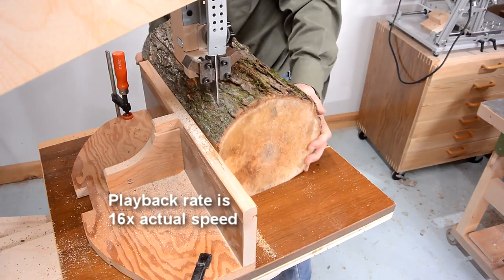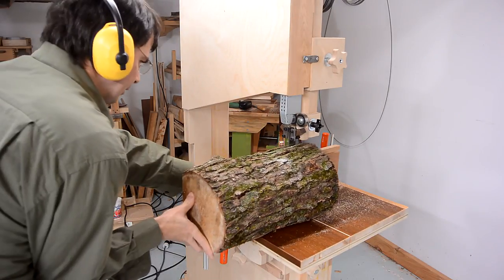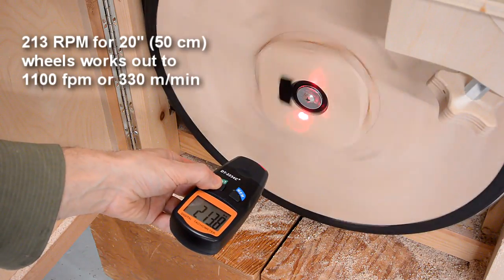I'm getting a lot of vibrations because I'm running this saw at a very slow speed. 1100 feet, or about 330 meters per minute.